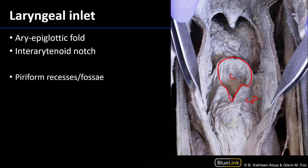We can see mounds of mucosa here. That mucosa will be invested by muscle within. There are arytenoid cartilages there — this is the interarytenoid notch — and then extending from the arytenoids up to the epiglottis are the aryepiglottic folds.